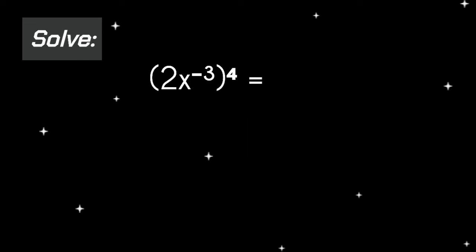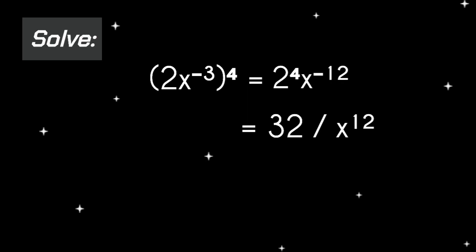Another situation: the quantity of 2x raised to the power of negative 3, raised to the power of 4. The first step is distributing the exponent, giving 2 raised to the power of 4 and x raised to the power of negative 12 (from negative 3 times 4). Now simplify: 2 to the 4th equals 16, and x raised to the power of negative 12 needs to be inverted, so the final answer is 16 over x raised to the power of 12.